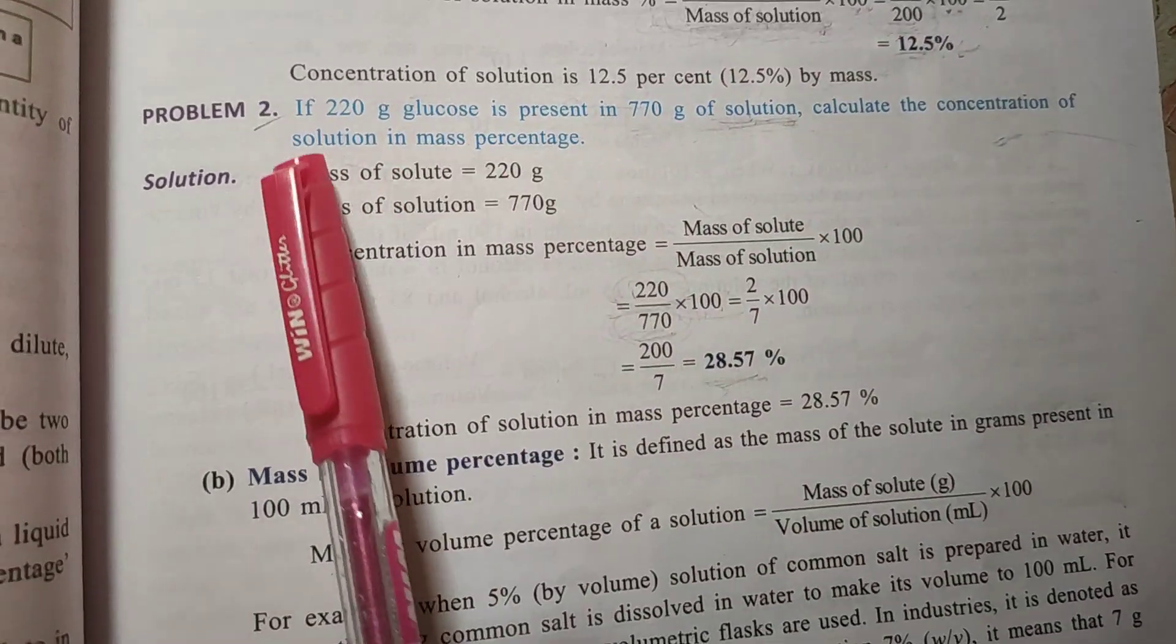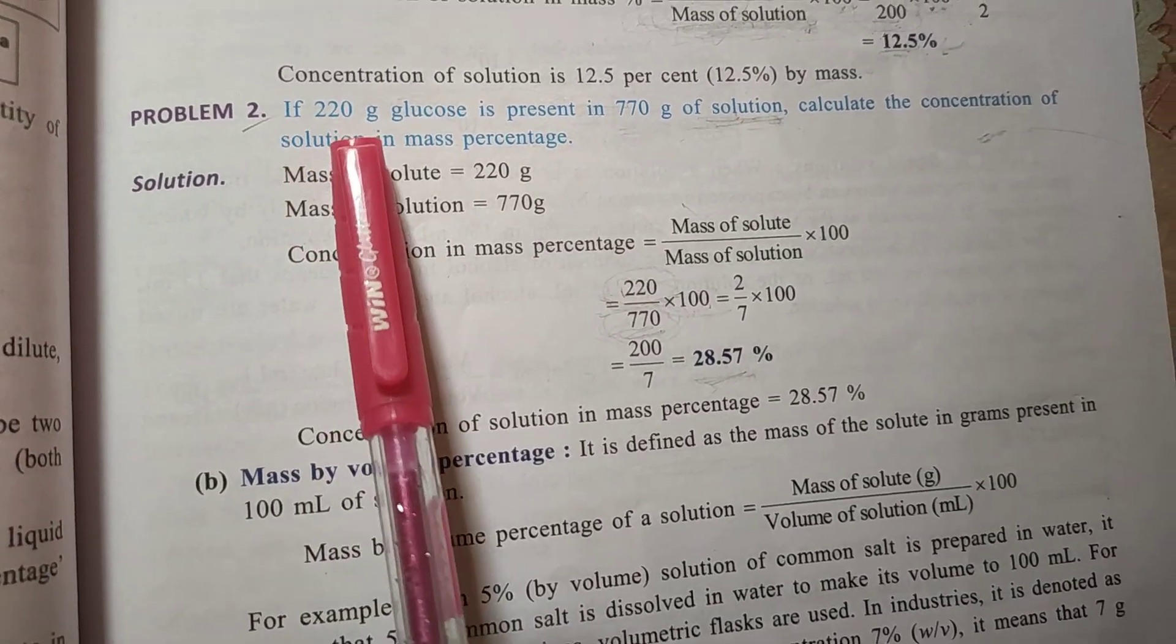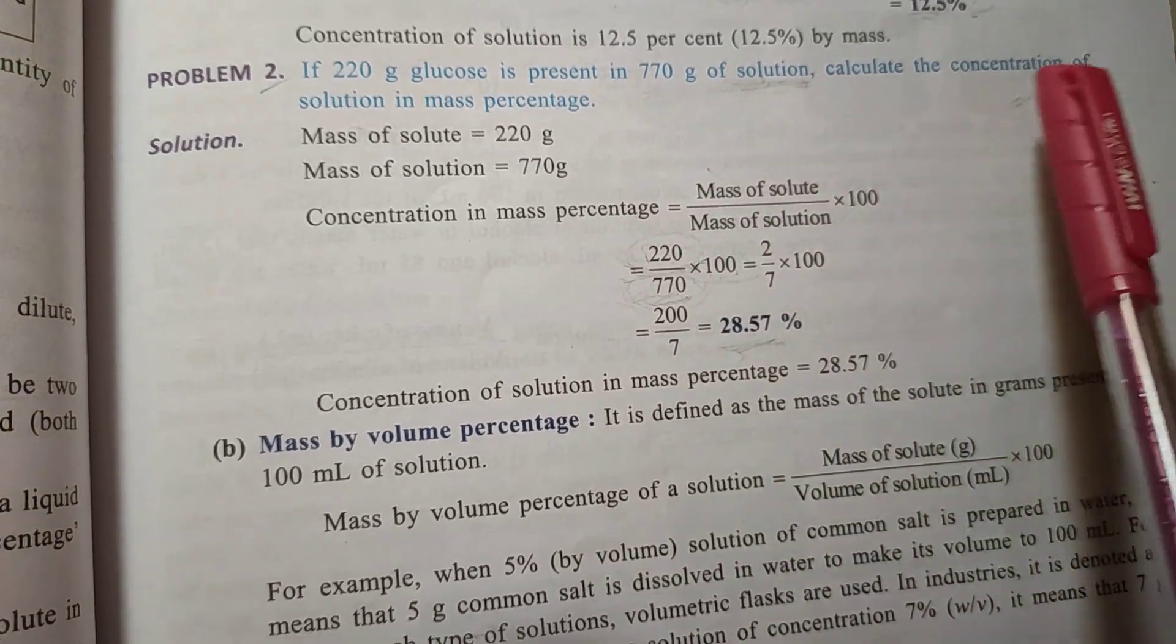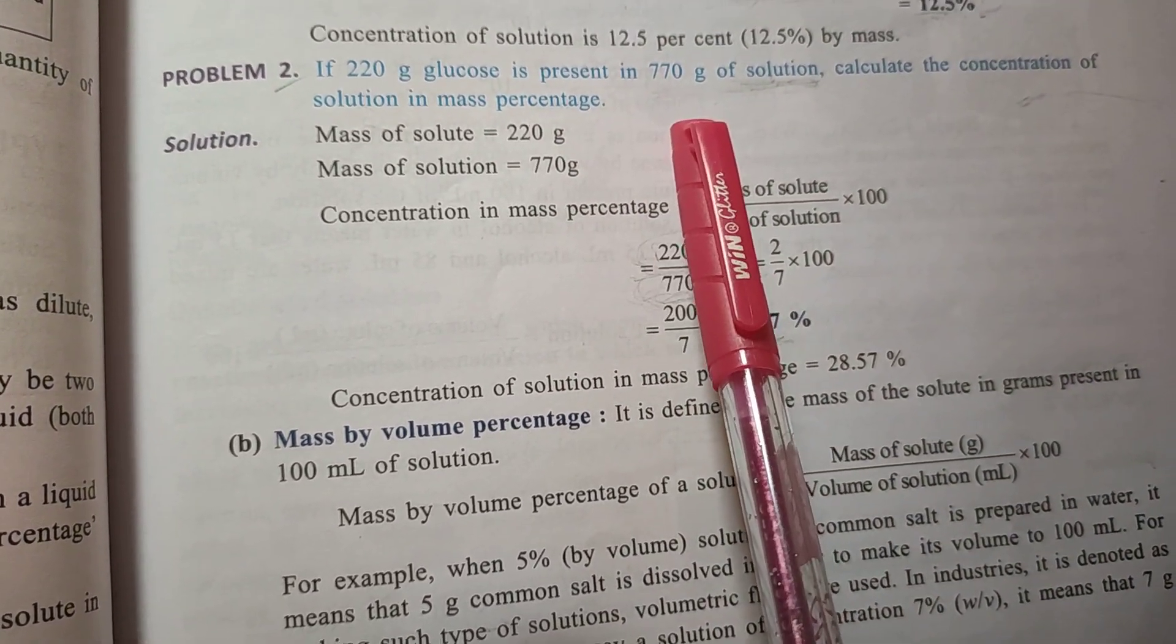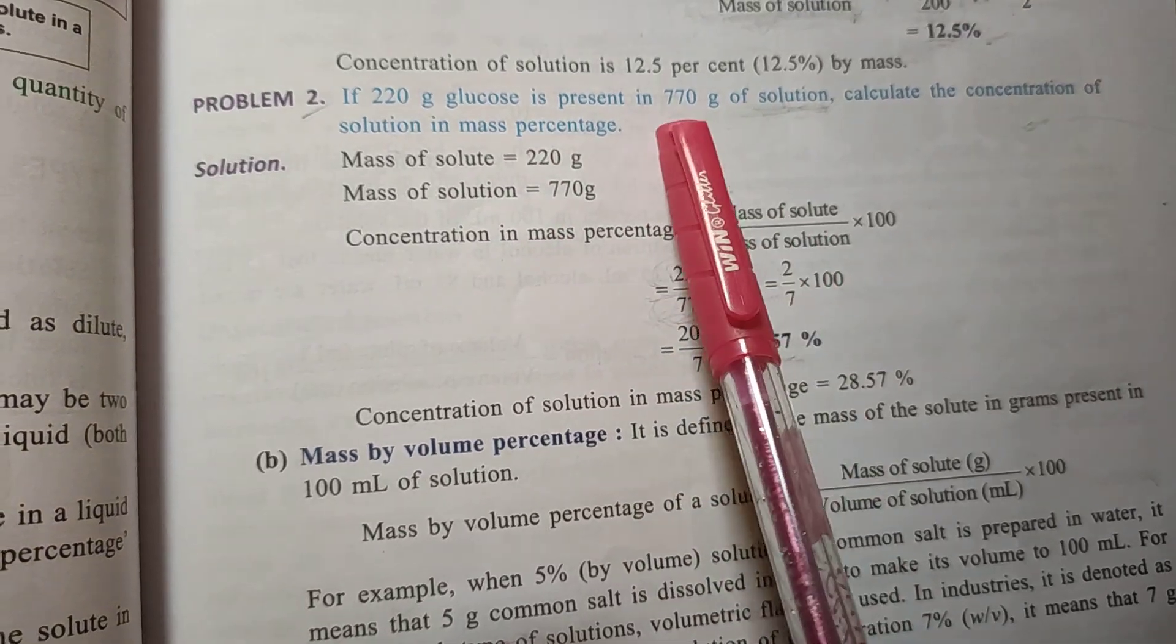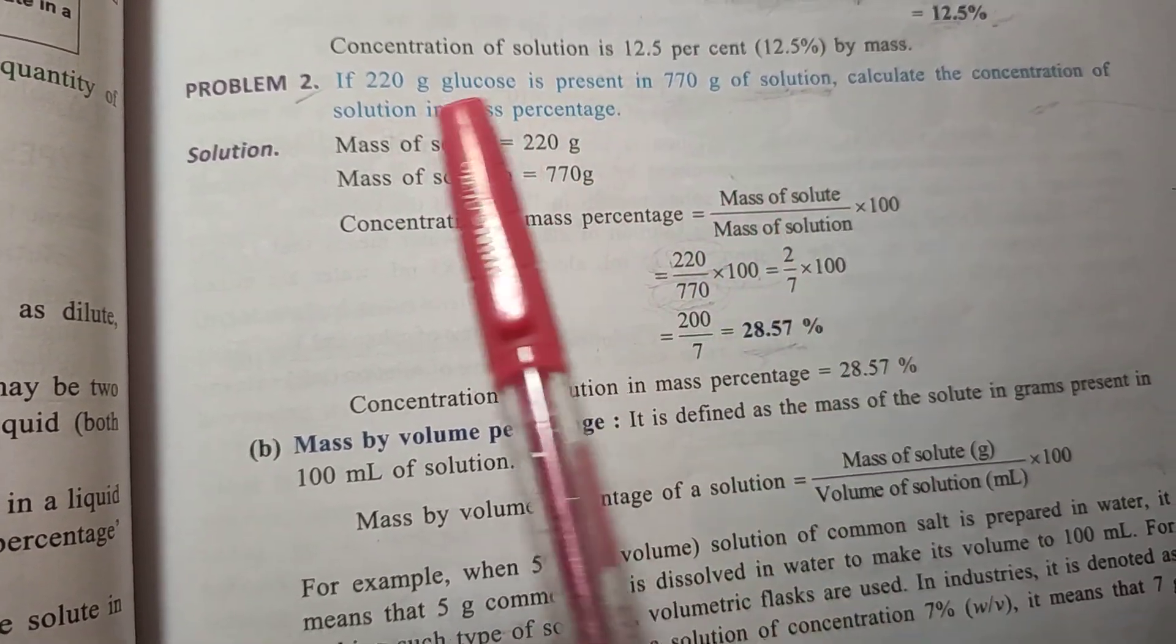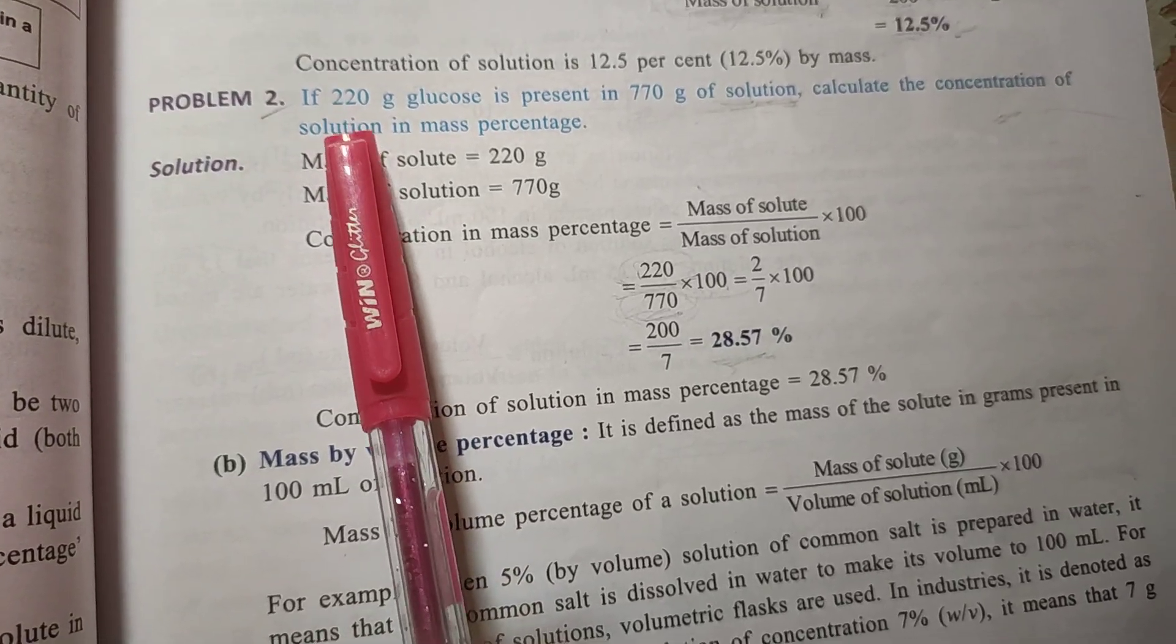Next question: if 220 gram glucose is present in 770 gram of solution, then calculate the concentration of solution in mass percentage. So the solution is already given, so we don't need to add solvent and solute. What is our solute? Solute is 220 gram glucose.